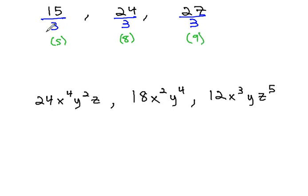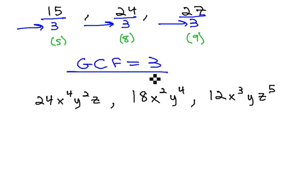And when we're talking about the greatest common factor, that's this number that we're dividing each term by. The greatest common factor of 15, 24, and 27 is 3, because it's the largest number we can divide all three of them by.